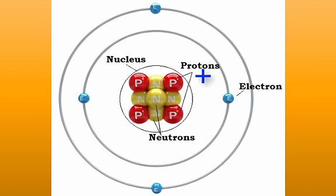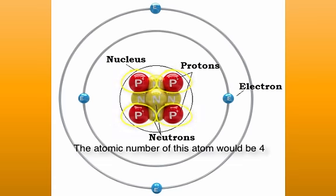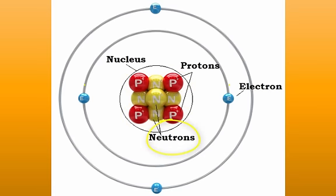The proton carries a positive charge, the electron carries a negative charge, and the neutron has no charge and is considered neutral. The protons are found in the nucleus, or the center of the atom. The number of protons determines the atom's atomic number. The neutrons are also found in the nucleus. The electrons are found in the electron cloud outside the nucleus.